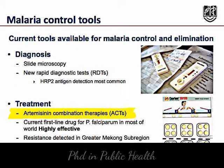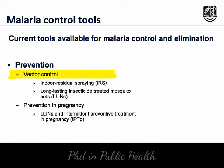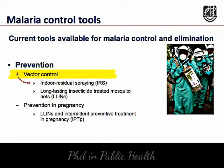Artemisinin-based combination therapies, or ACTs, are the current first-line drug for treating Plasmodium falciparum. They are highly effective; however, it should be noted that drug resistance to artemisinin has now been detected in the Greater Mekong Region. The primary vector control tools include indoor residual spraying and long-lasting insecticide-treated mosquito nets, both of which are highly effective.